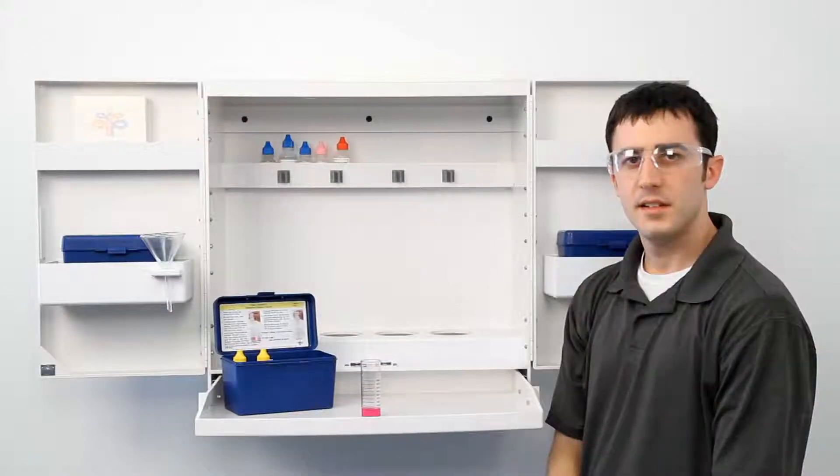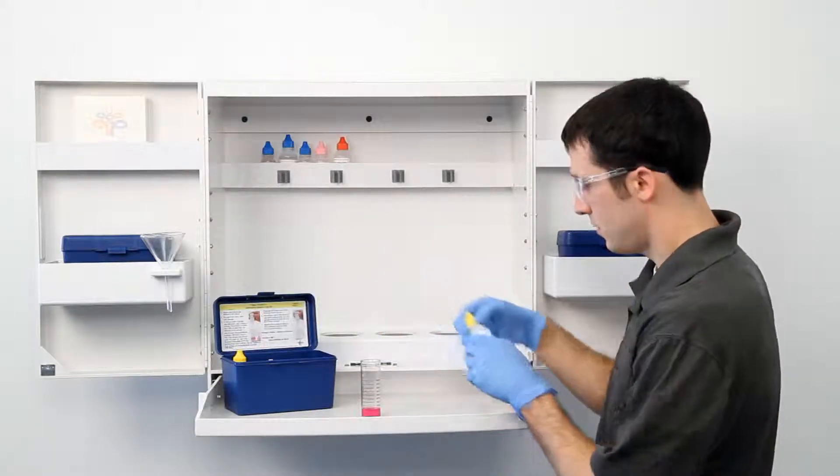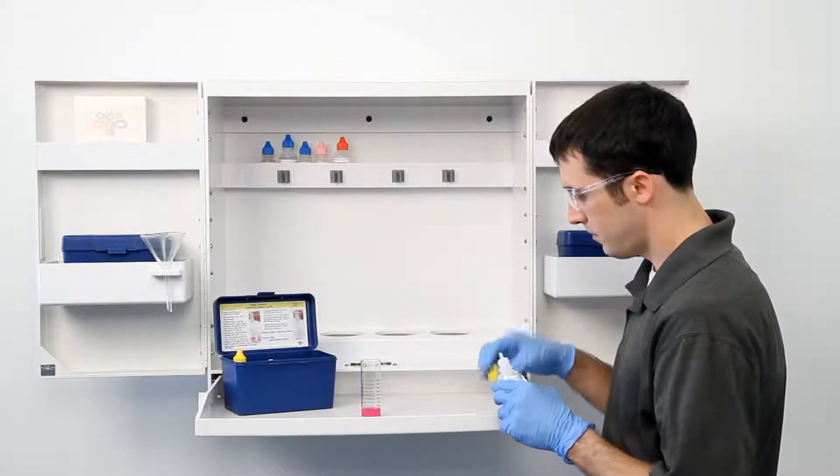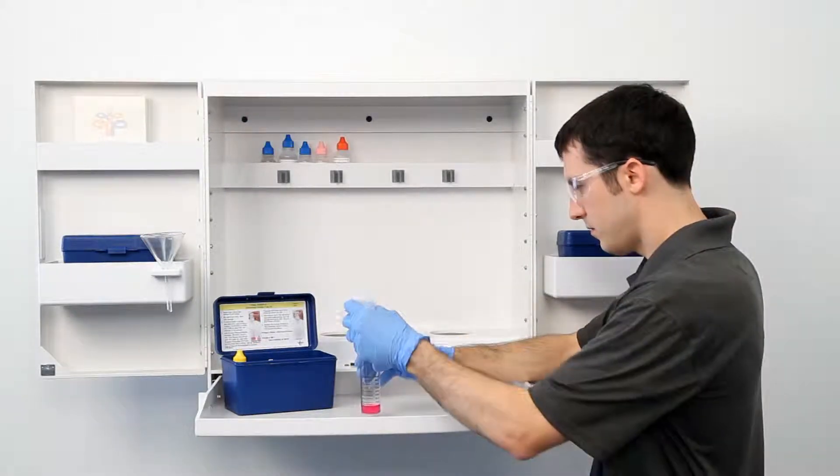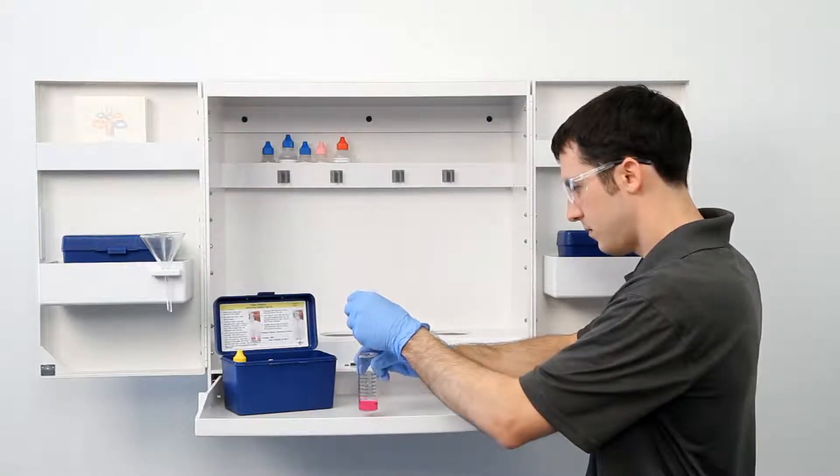The next step according to the Endpoint ID procedure is to perform the titration. You have several choices of titrant strength. Reference the Endpoint ID Plus instruction sheet or the test factor card to determine the proper titrant normalcy. It's important to make sure you have the proper titrant and the proper sample size for this titration.